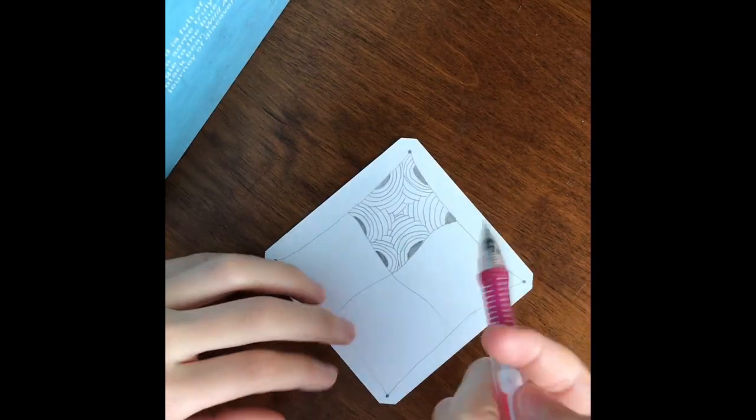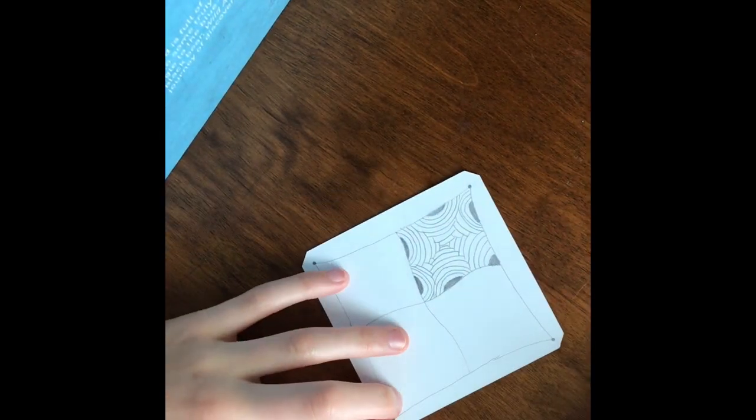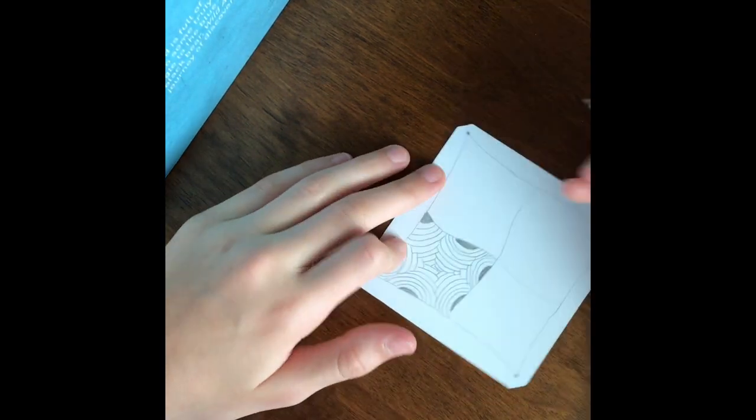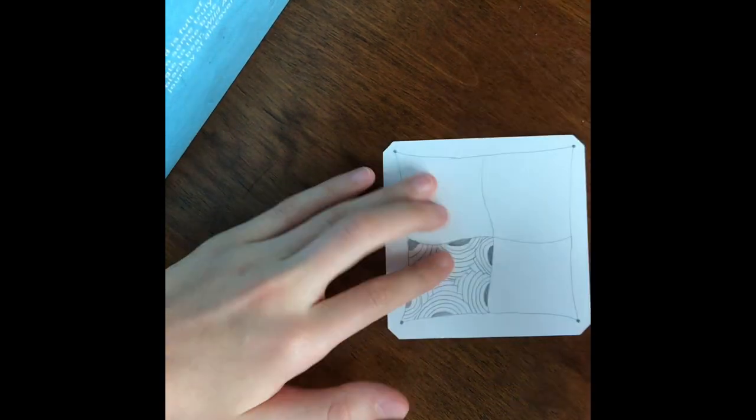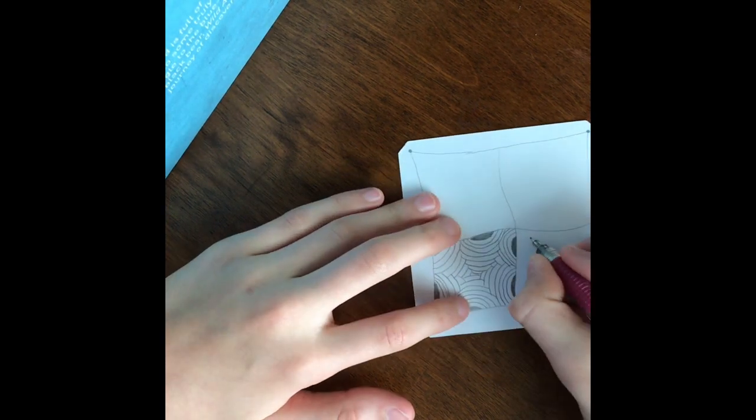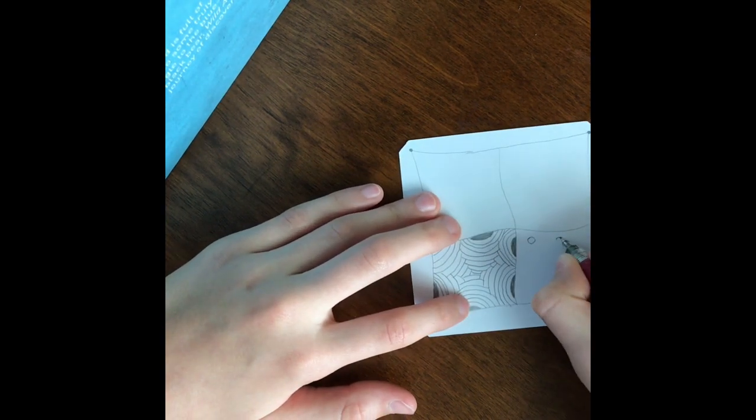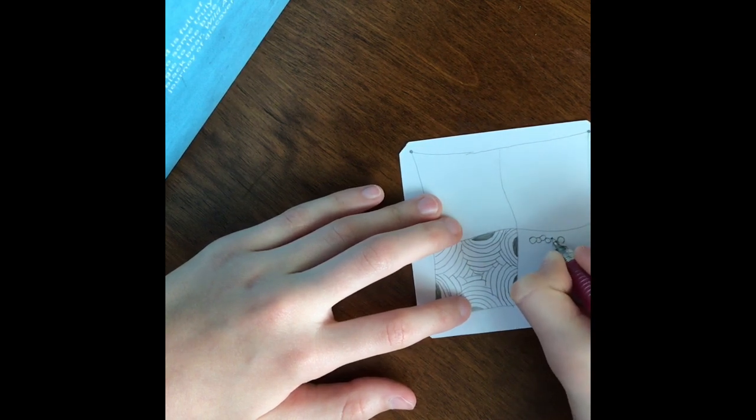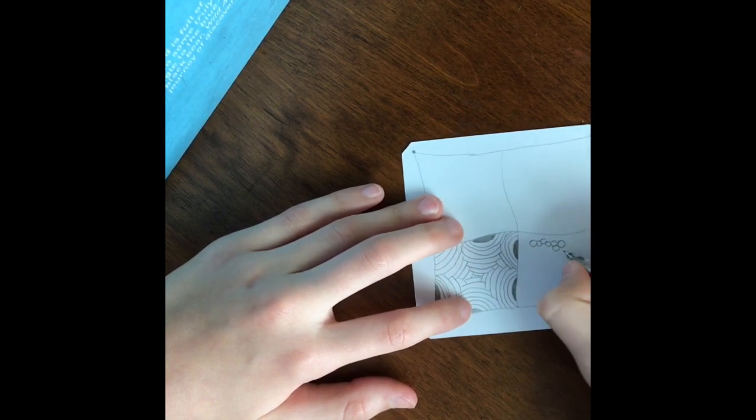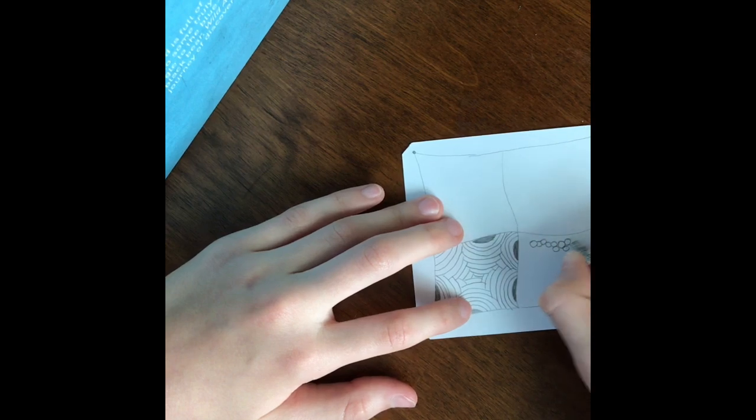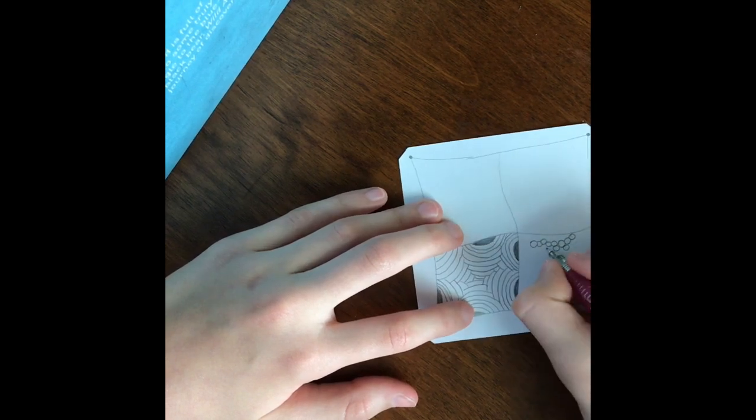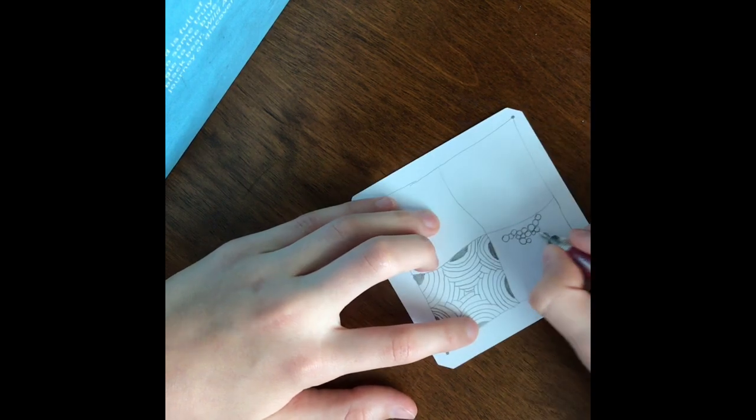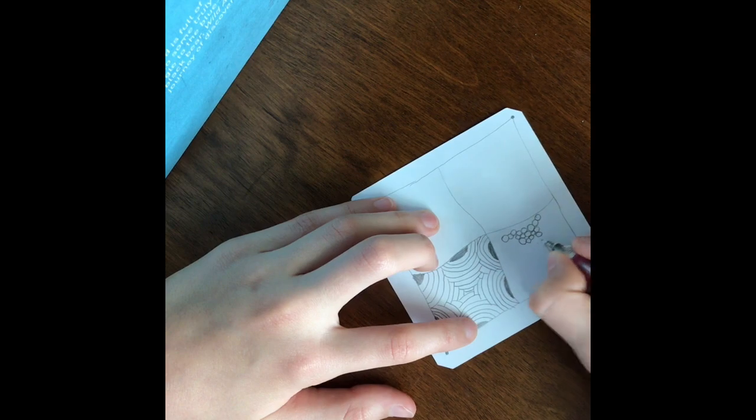Now with that complete we can start on our second tangle which will be tipple. This is a pretty simple one. You basically just do little circles and you connect them with more circles. You'll keep doing this until you fill up your whole entire space and you can do different sizes of circles. Some will be bigger some will be smaller. You're just trying to fill in all those little spaces.